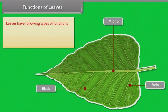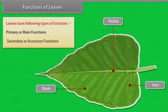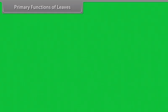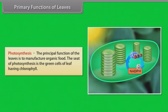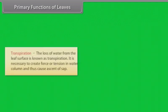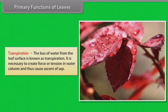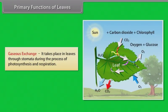Functions of leaves: Leaves have following types of functions: primary or main functions and secondary or accessory functions. Primary functions of leaves: Photosynthesis: The principal function of the leaves is to manufacture organic food. The seat of photosynthesis is the green cells of leaf having chlorophyll. Transpiration: The loss of water from the leaf surface is known as transpiration. It is necessary to create force or tension in water column and thus cause ascent of sap.